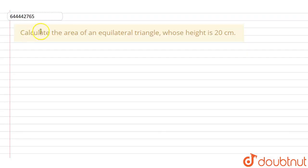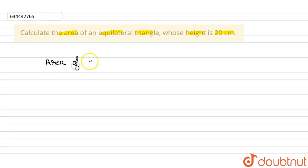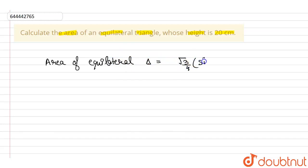In this question, we have to calculate the area of the equilateral triangle whose height is given to us as 20 centimeters. The area of an equilateral triangle is given as root 3 by 4 times side squared. This is the area formula for the equilateral triangle.